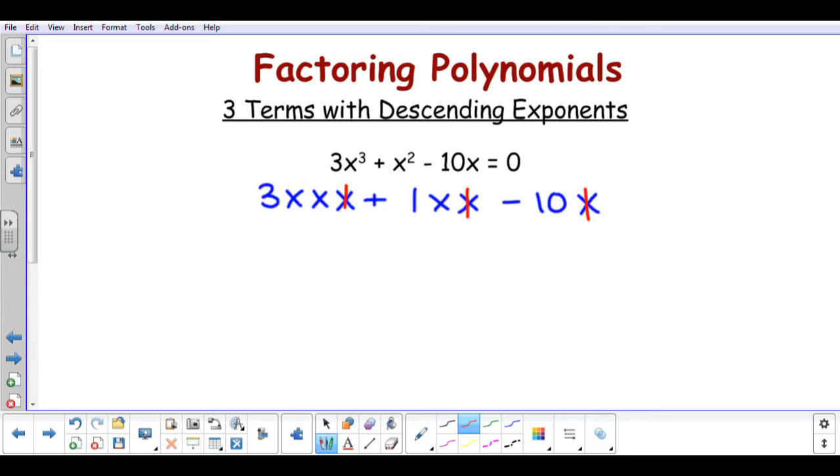So I'm going to put an x in front, and then I'm going to be left with 3x squared plus 1x minus 10. Now this inside portion, I'm going to factor using the British method or the box method.